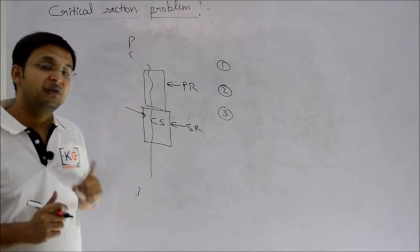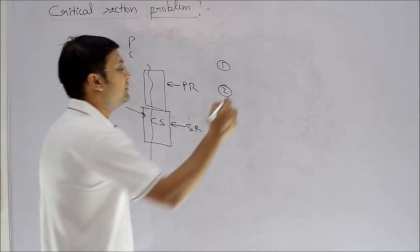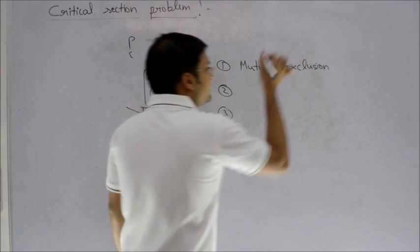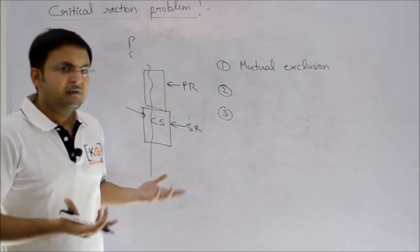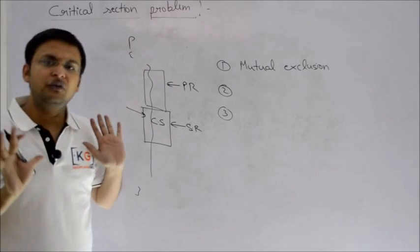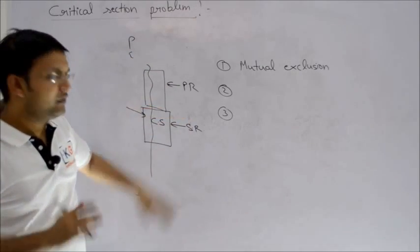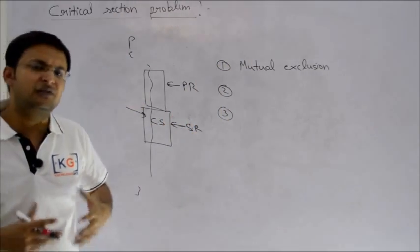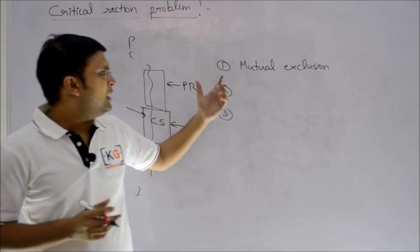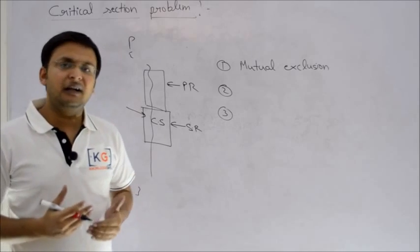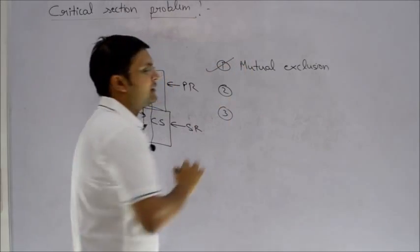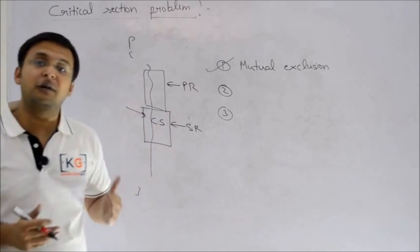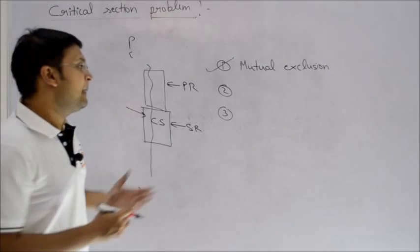First one is very important: mutual exclusion. Whatever solution you give to solve critical section problem, critical section must be accessed by only one process at a time in mutual exclusive fashion. Criteria can be divided into two types: one is called mandatory criteria, one is called optional criteria. Mutual exclusion is a mandatory criteria. Next is progress.